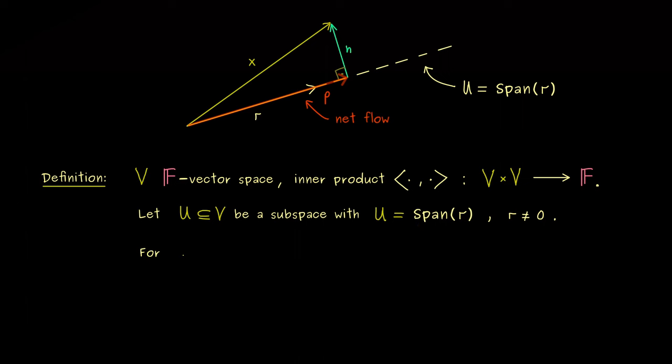However, it should be a one-dimensional one, which means we can write it as a span as before. So we can just fix the direction r, which means it should not be given by the zero vector. So in this case the vector r determines the whole subspace U. Okay, and now for any vector x in V we can write down such a decomposition.